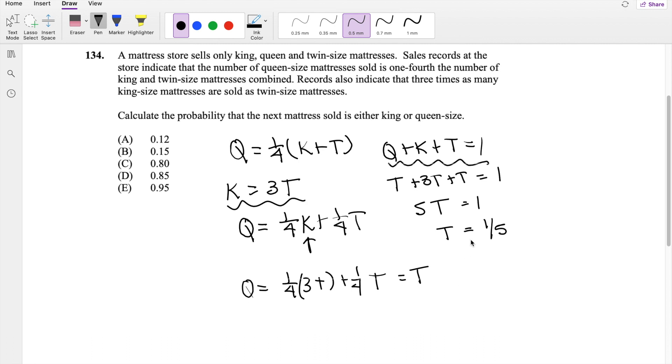Moving on, if we know T is equal to one-fifth, then we know the king bed must be equal to three times T. So that's going to be three-fifths. And lastly, the probability of queen is equal to just twin, so it's going to be one-fifth.